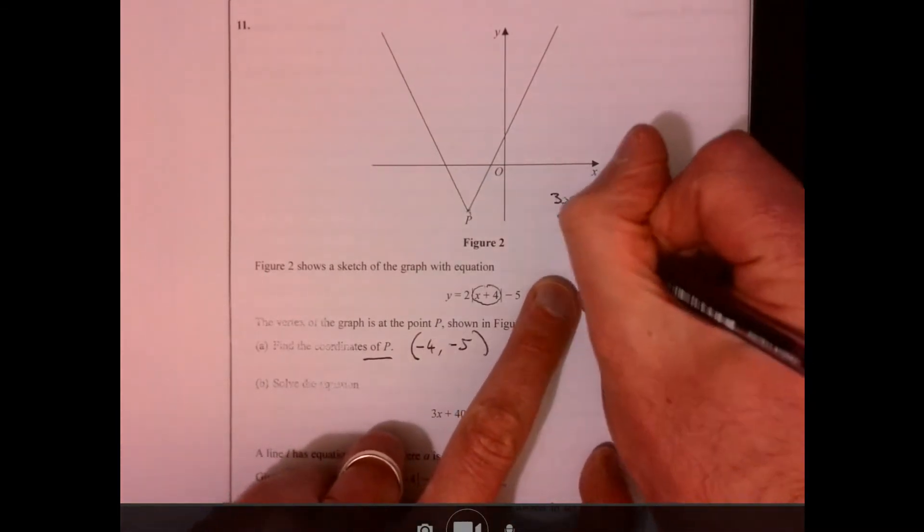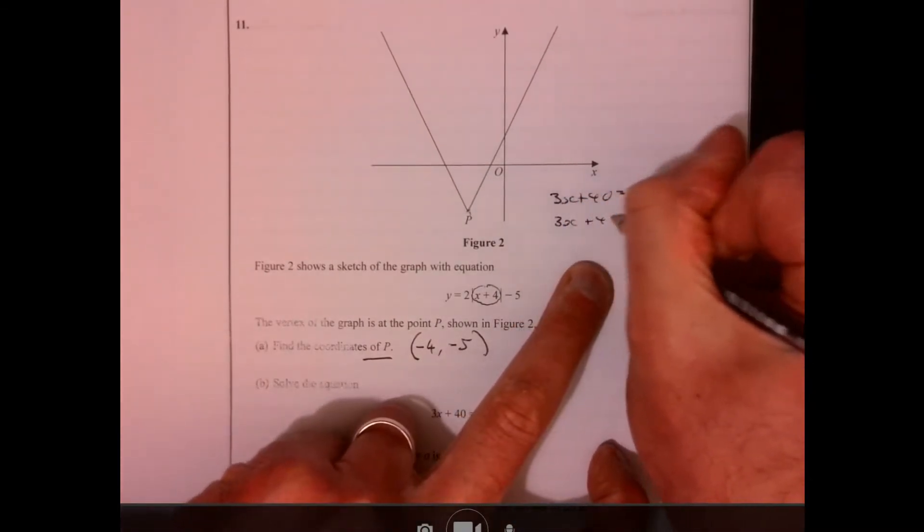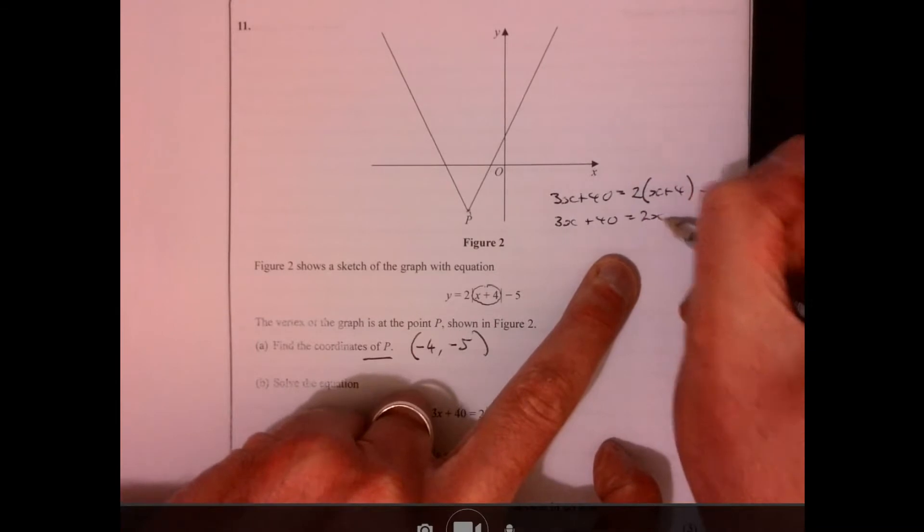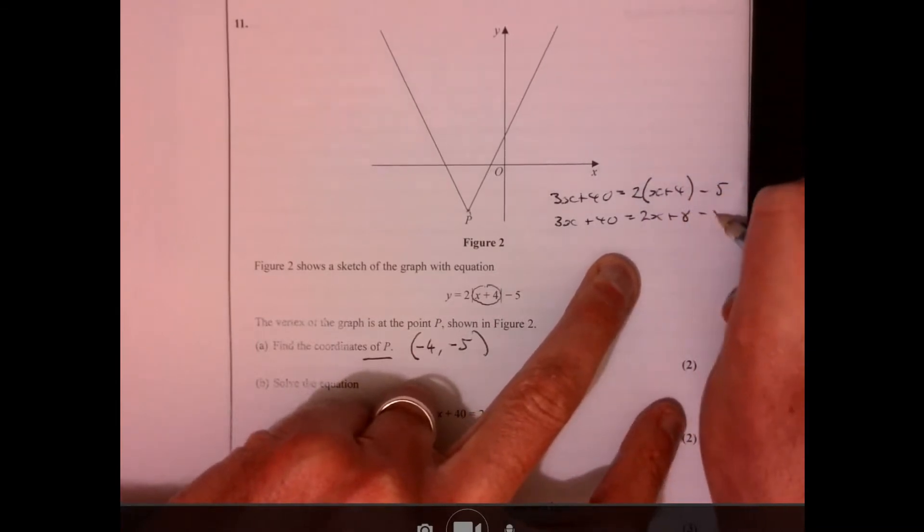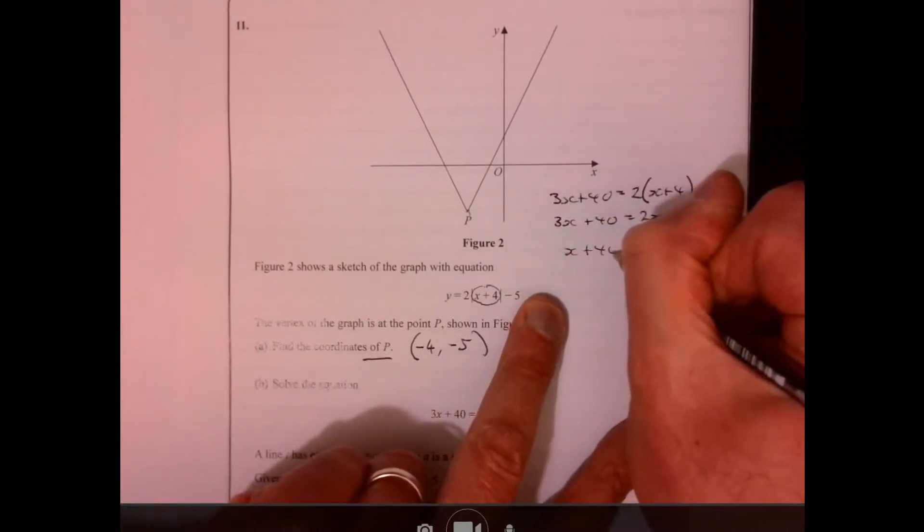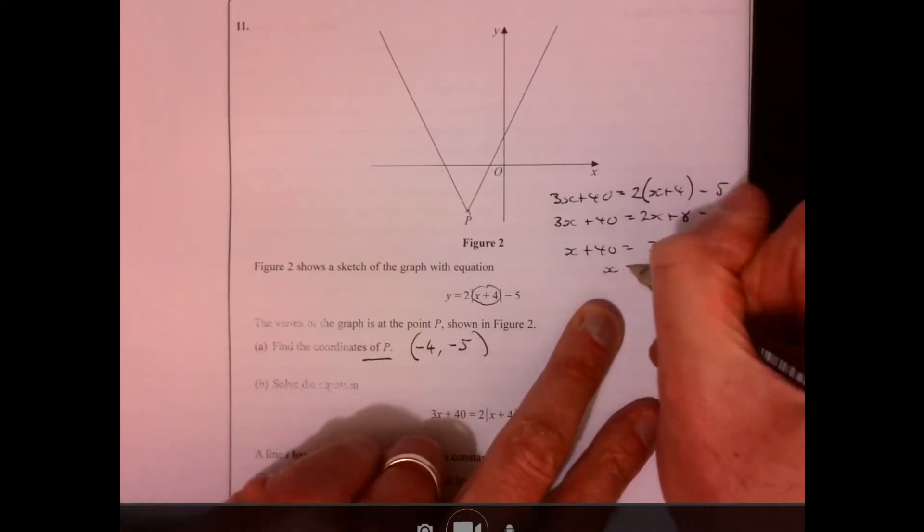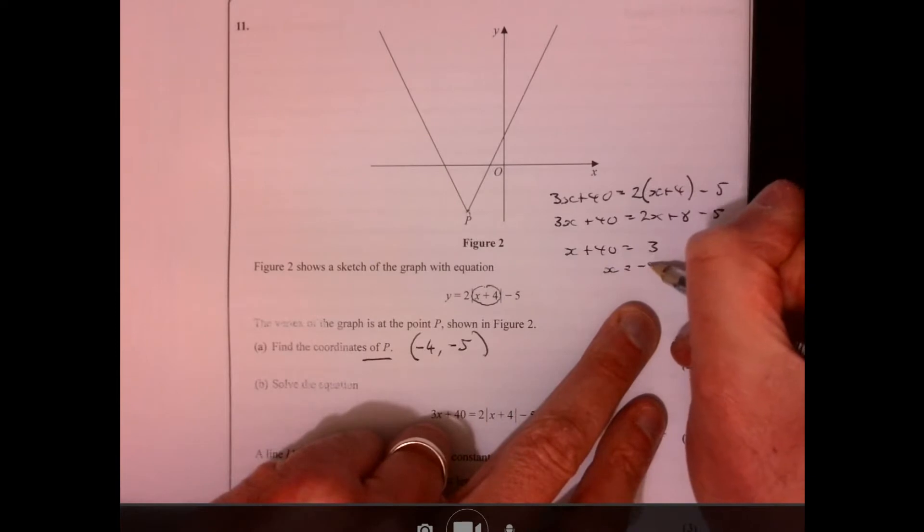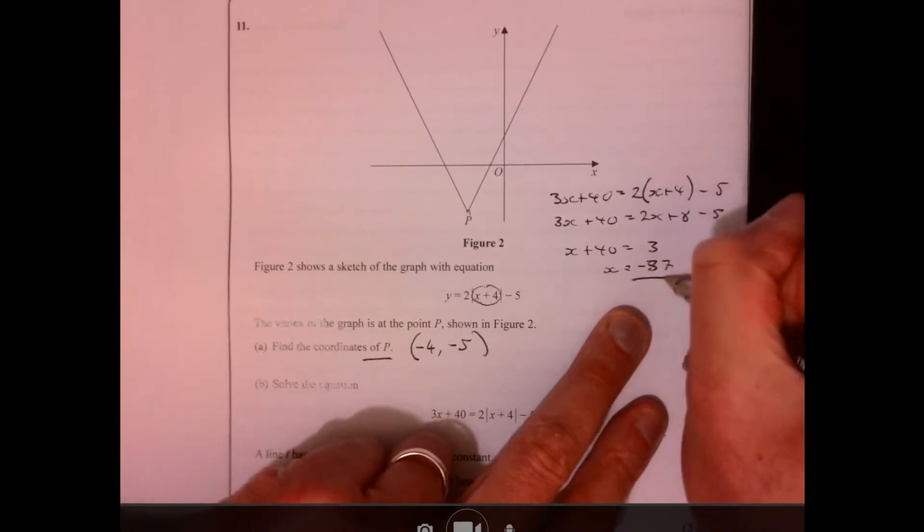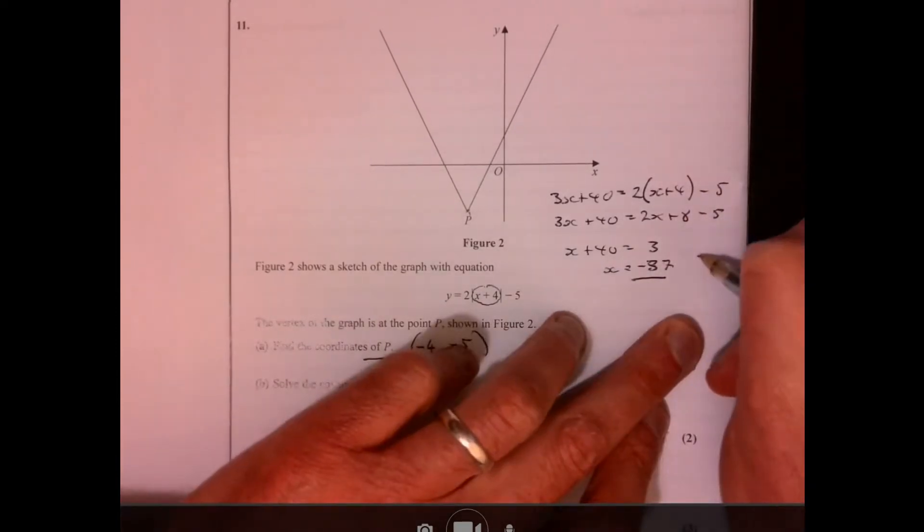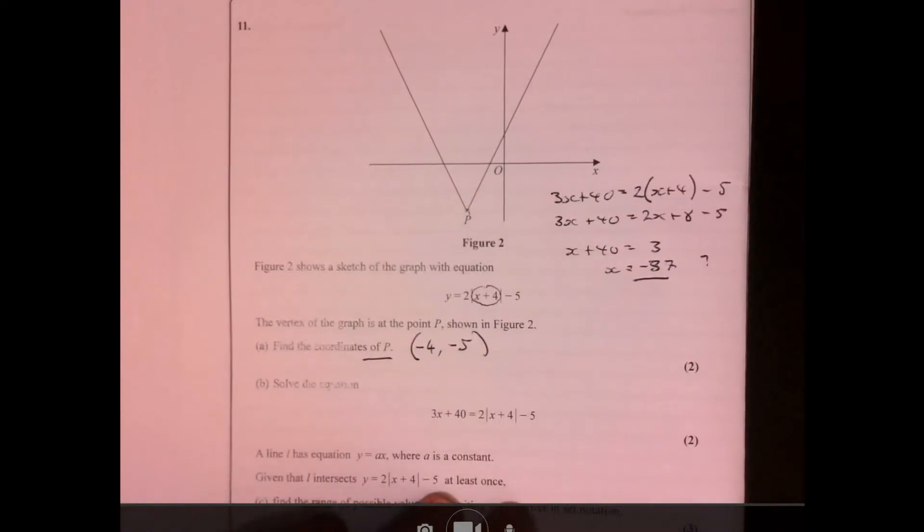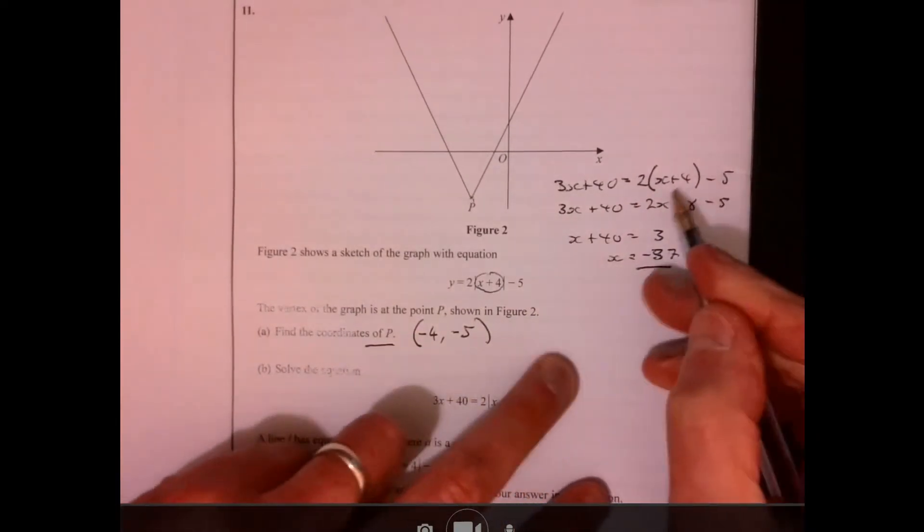So then this just gives me something I can easily solve. So plus 40 equals 2x plus 8 minus 5. So x plus 40 equals 3, so x equals minus 37. I'm going to come back to that in just a second. I'm putting a question mark. You'll see why I've got a question mark there in a moment.